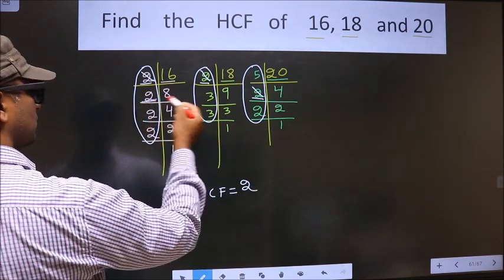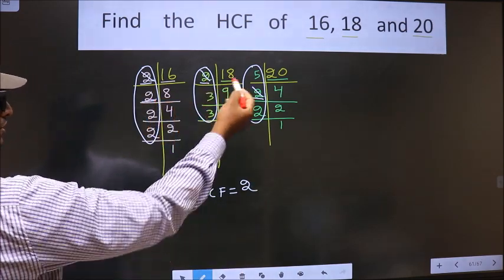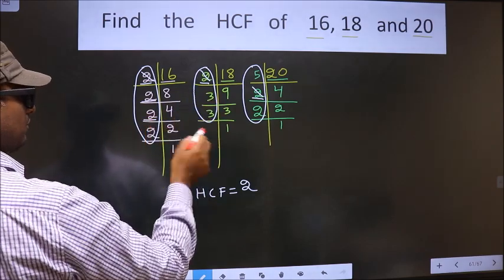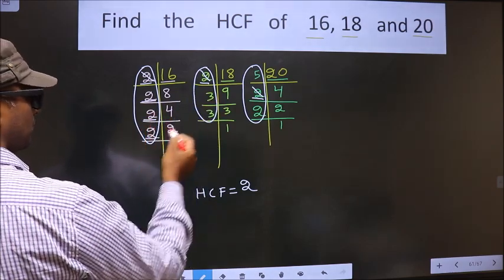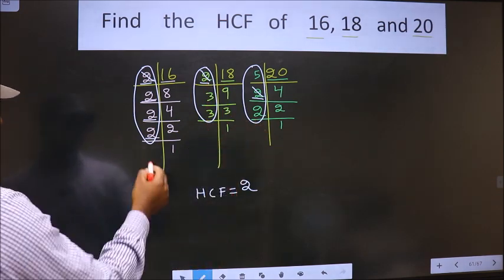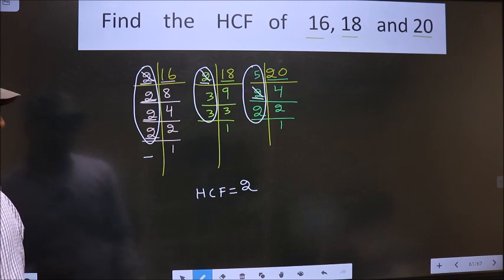Next number is 2. Do we have 2 here? No. No need to check in the other place. Next number is 2. Do we have 2 here? No. Next number is 2. Do we have 2 here? No. No need to check in the other place. So no more numbers are left.